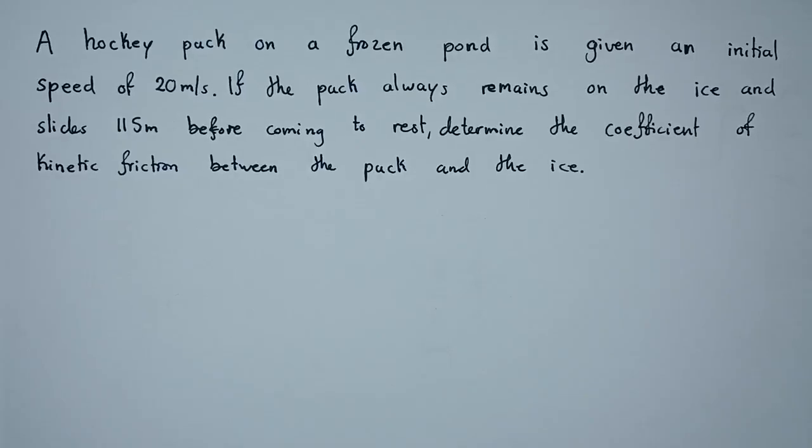Hi guys, let's see how we can solve this question in dynamics. The question reads: a hockey puck on a frozen pond is given an initial speed of 20 meters per second. If the puck remains on the ice and slides 115 meters before coming to rest, what we're looking for is the coefficient of kinetic friction.